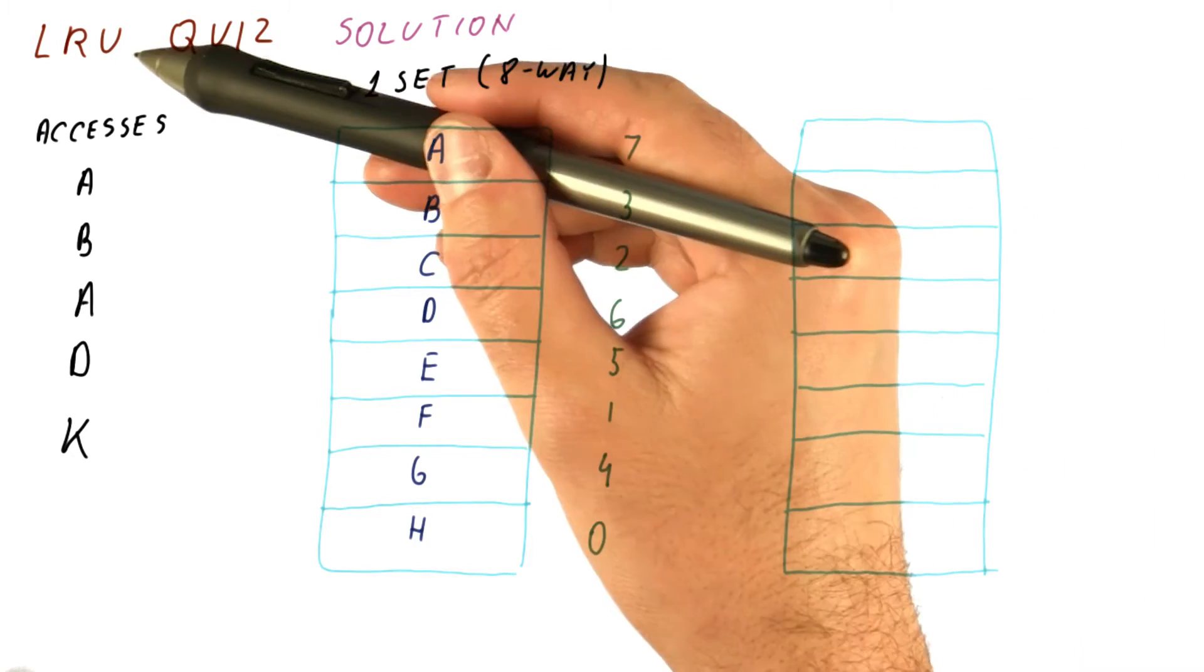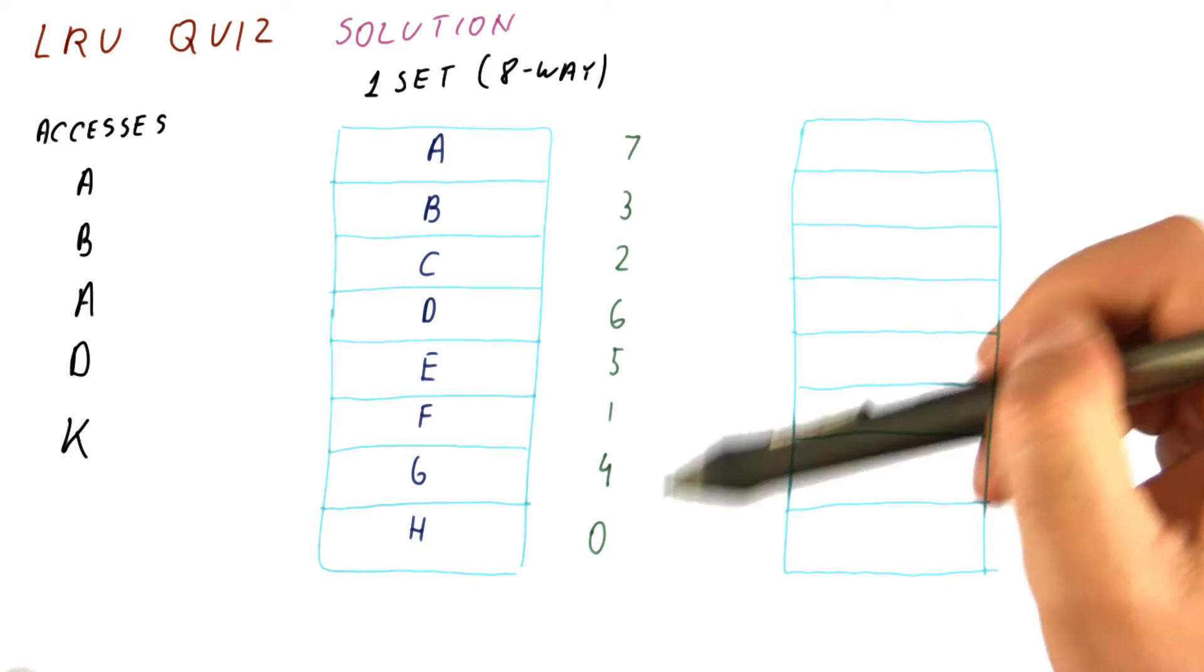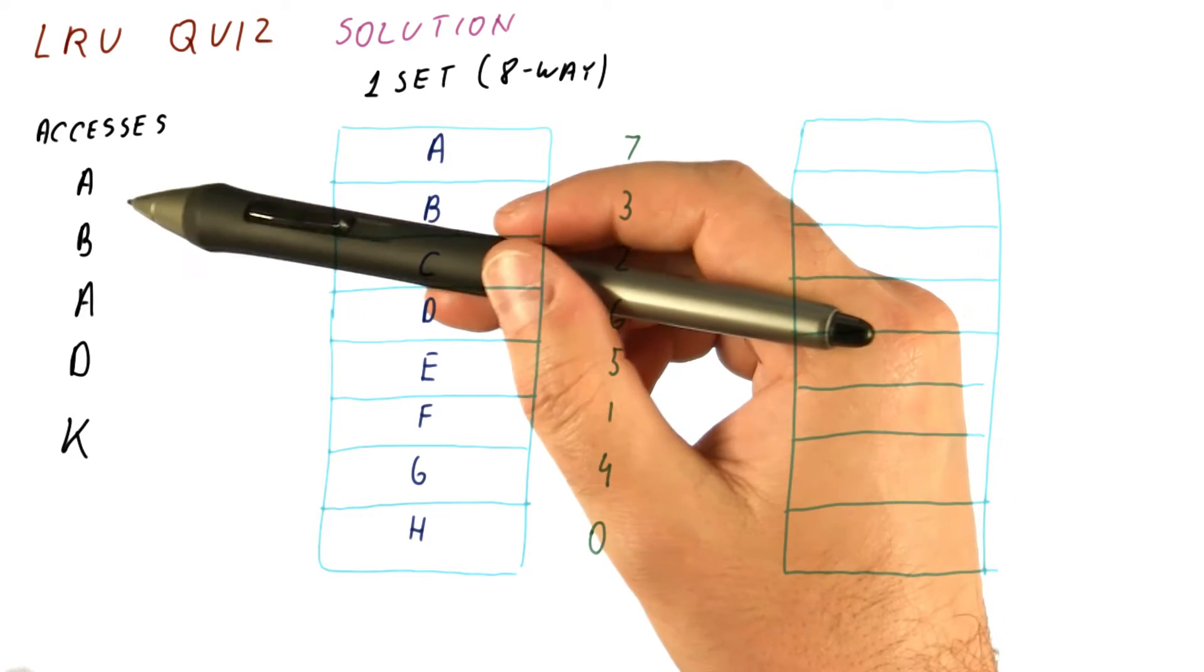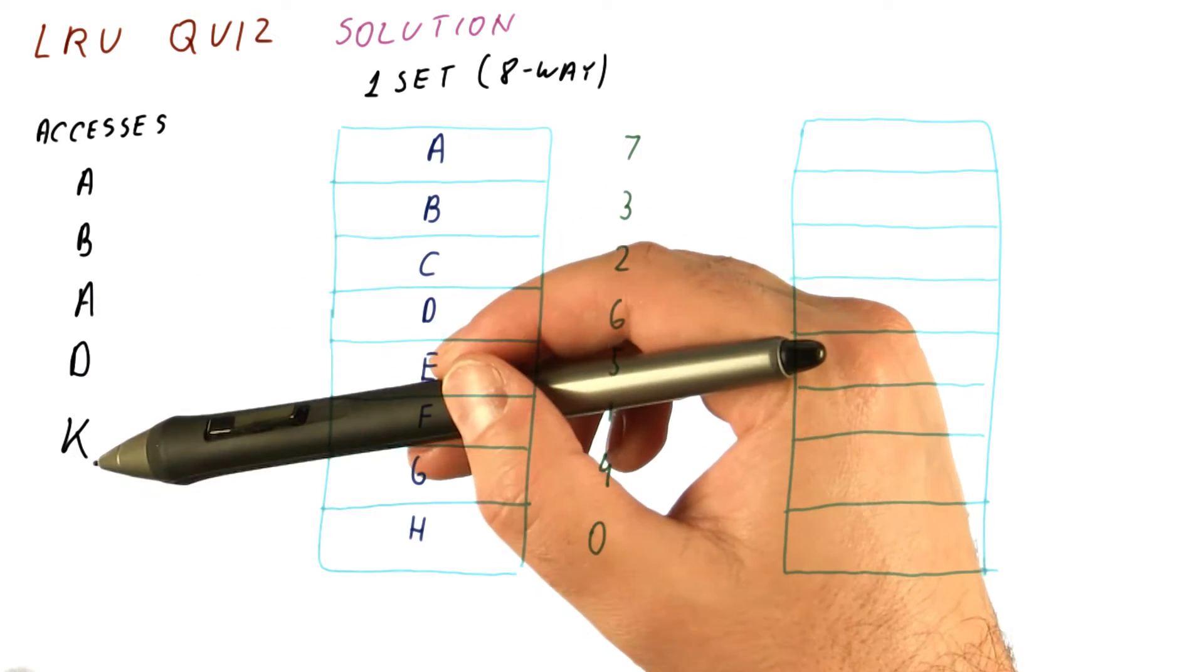Let's look at the solution to our LRU quiz. We had this situation in the cache and these counters before these accesses, and now we're performing accesses to A, B, A, D, and K.